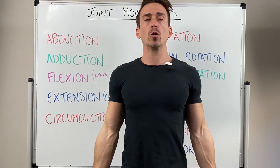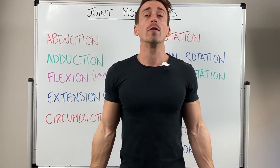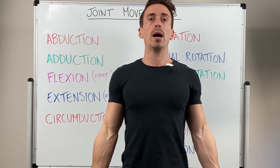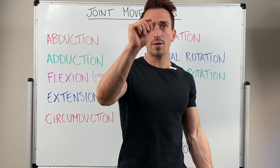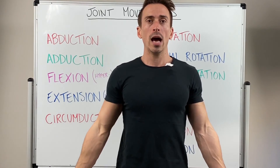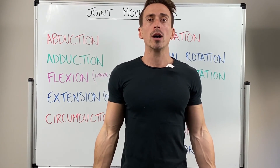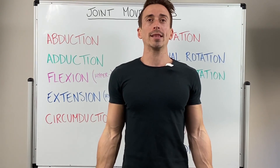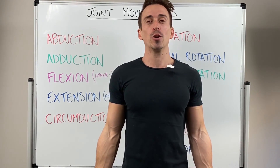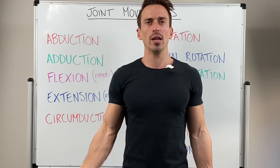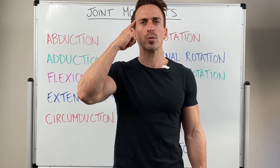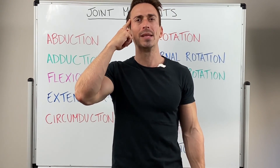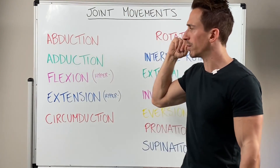This is the anatomical position: feet shoulder-width apart, eyes facing forward, arms by the side, palms facing forward like this. Keep that in mind as we go through these particular types of joint movement.